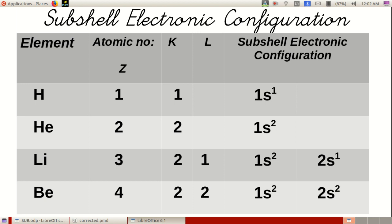Similarly, in helium, its atomic number is 2, so 2 electrons are present in the K-shell. The subshell electronic configuration is 1S2.